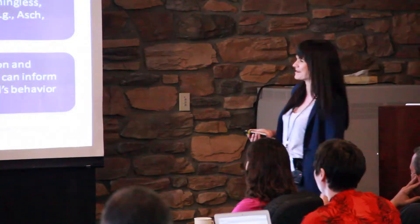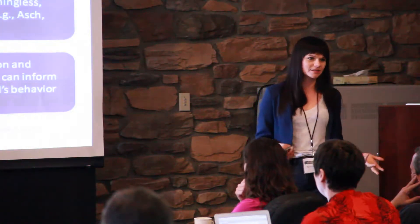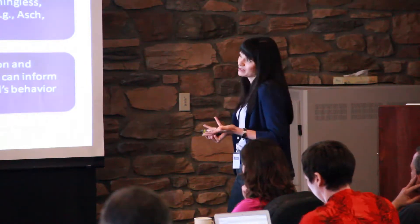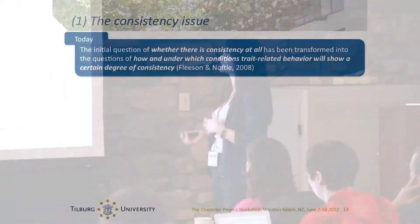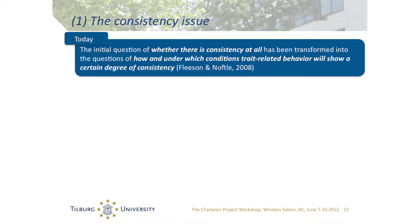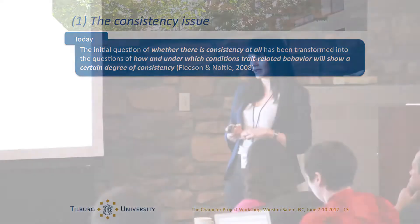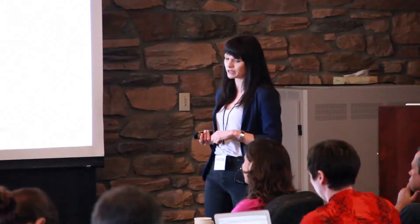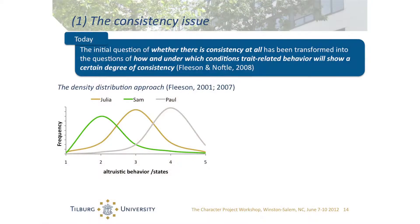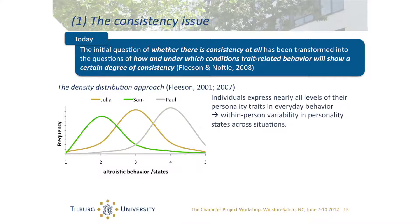Whether a character exists and whether there are situations in which we express our character — I think we might reformulate the original question of whether there's consistency at all, and rather ask how and under which conditions trait-related behaviors would show a certain degree of consistency. I'm what Angela would call a Fleeson follower, because I think a good model for that is the density distribution approach. According to this approach, traits can be considered as density distributions of their corresponding states, where states are defined as trait-relevant behaviors, feelings, and thoughts. Individuals can express nearly all levels of their personality traits in everyday behavior, which explains the large degree of within-person variability in personality states across situations.